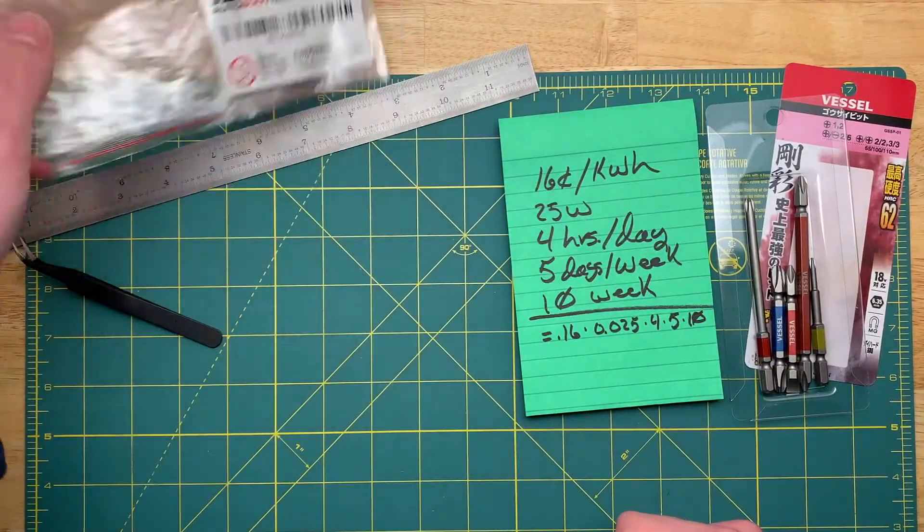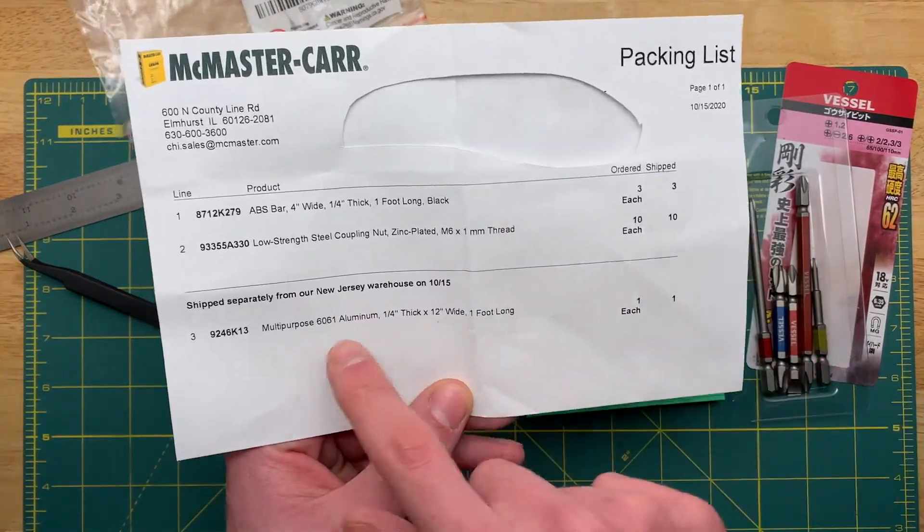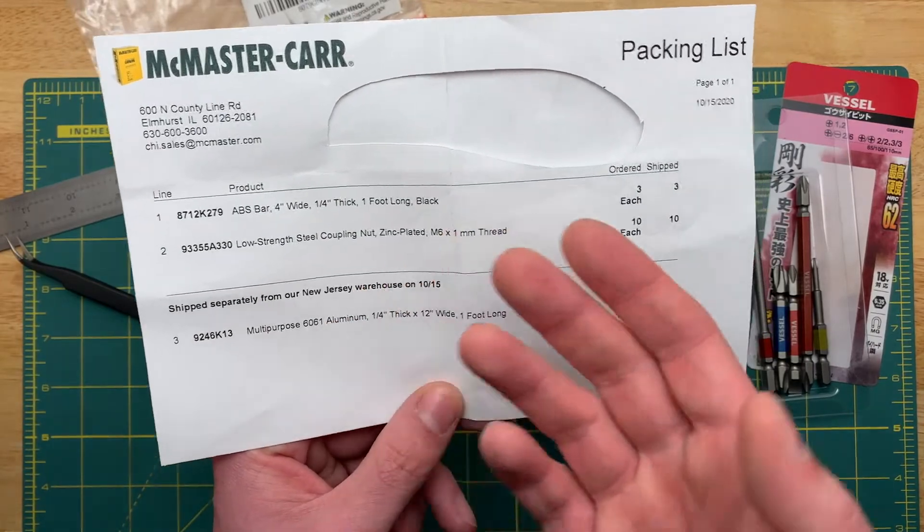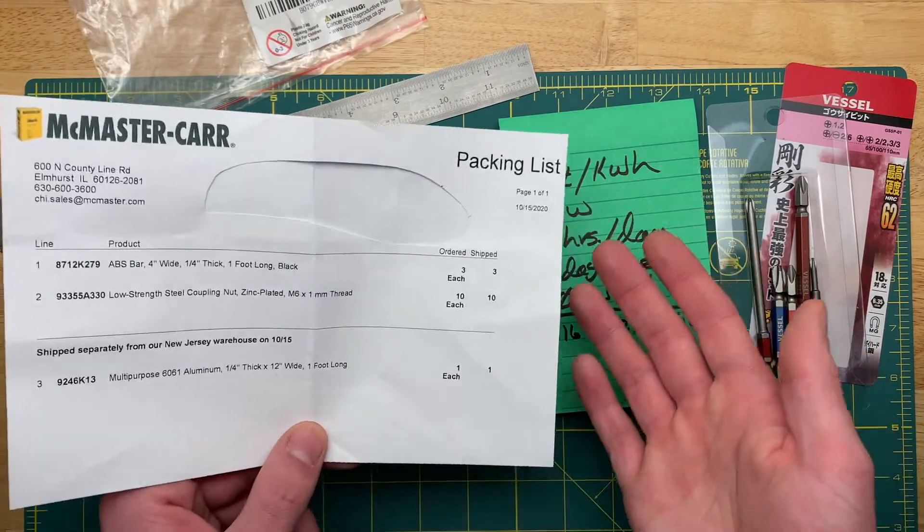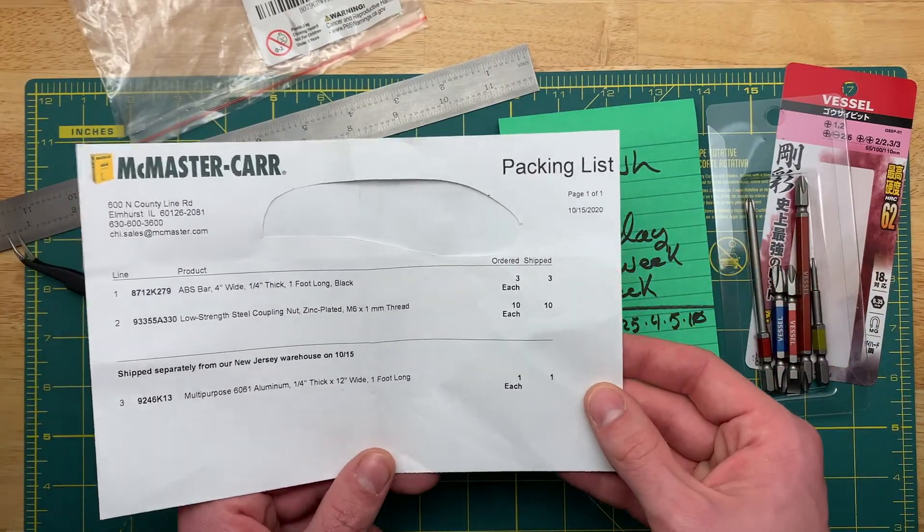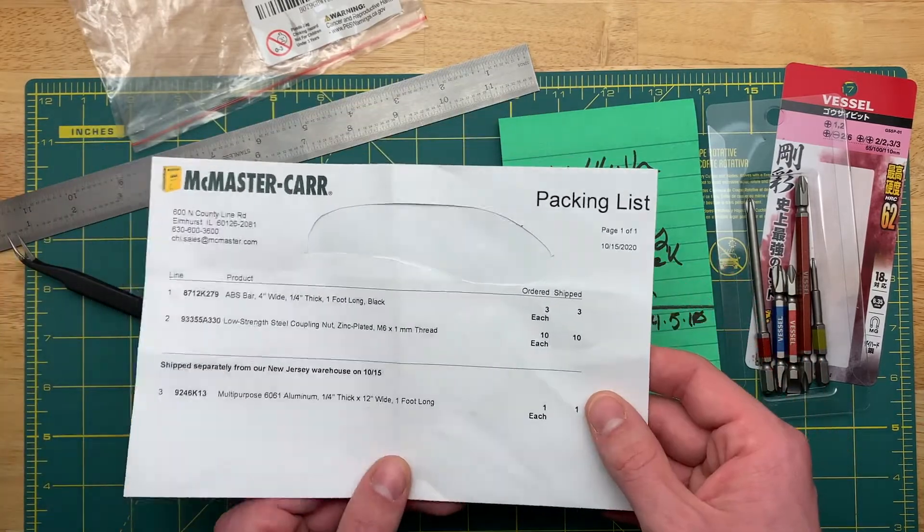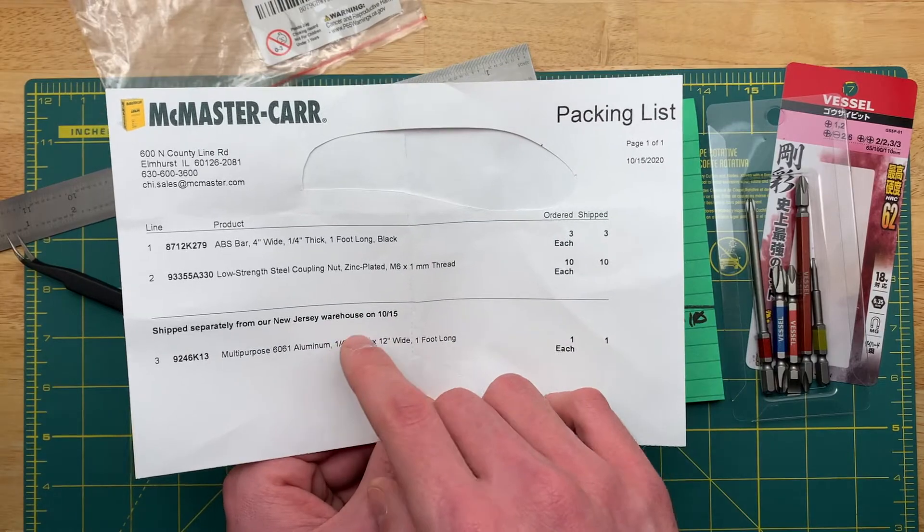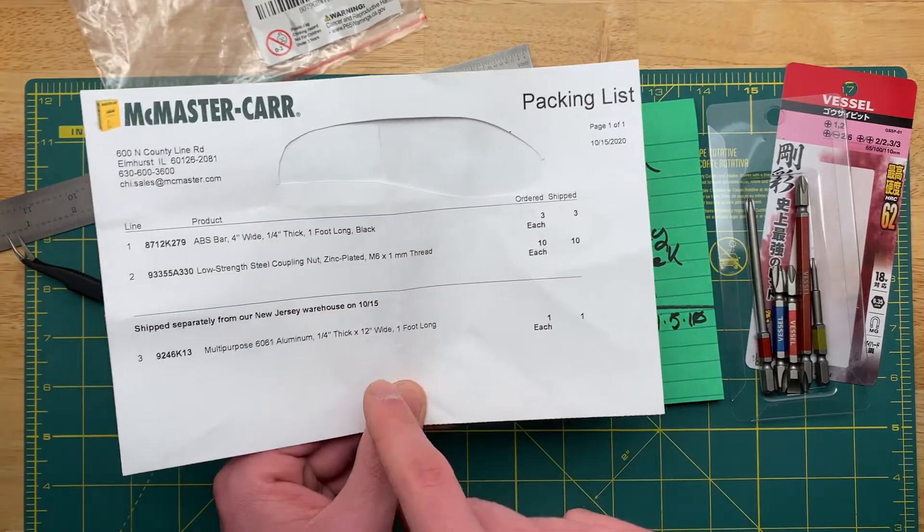One more thing to talk about is the supplier I used for the aluminum. I went with McMaster Carr. They are a good supplier of good quality stuff at a reasonable enough price, and the shipping is always very fast. It's usually next day, one time I got something same day which is crazy. But you pay for it, I mean you really pay for it.